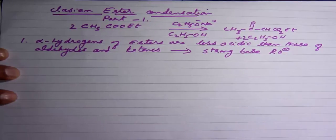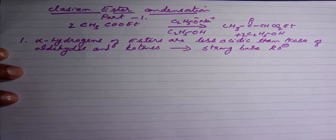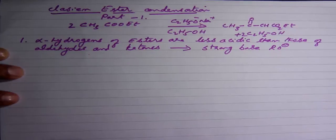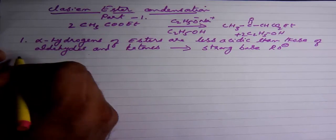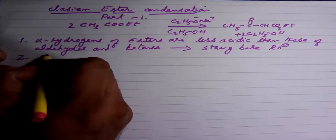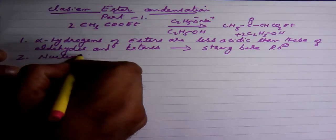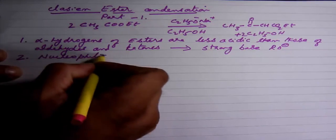And the second difference is that during the aldol condensation there is a nucleophilic addition, whereas in Claisen ester condensation there is a nucleophilic substitution.